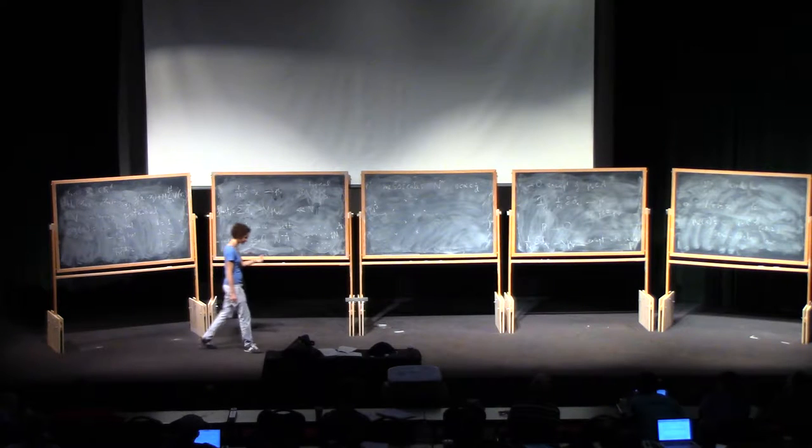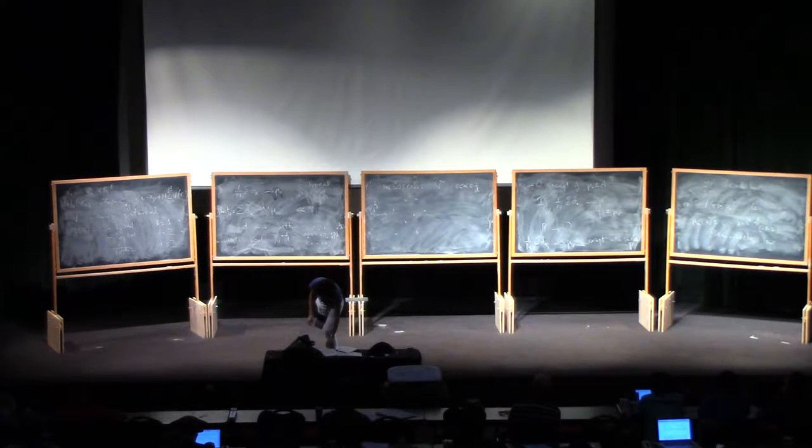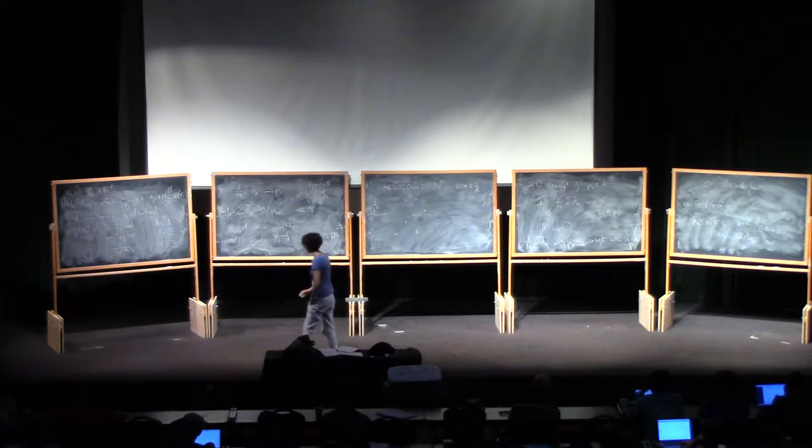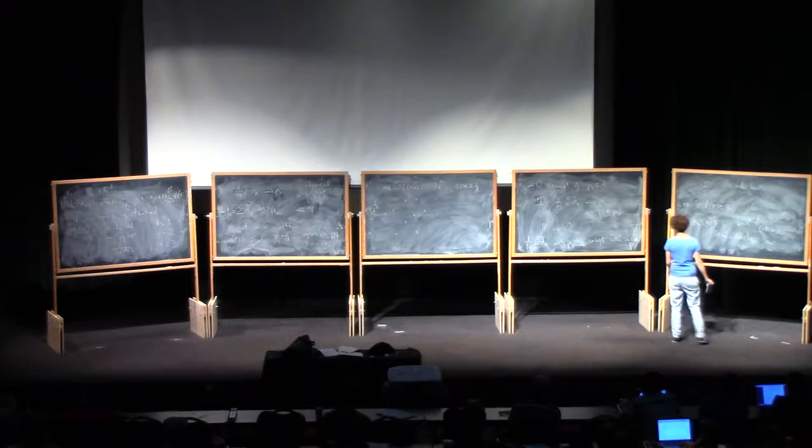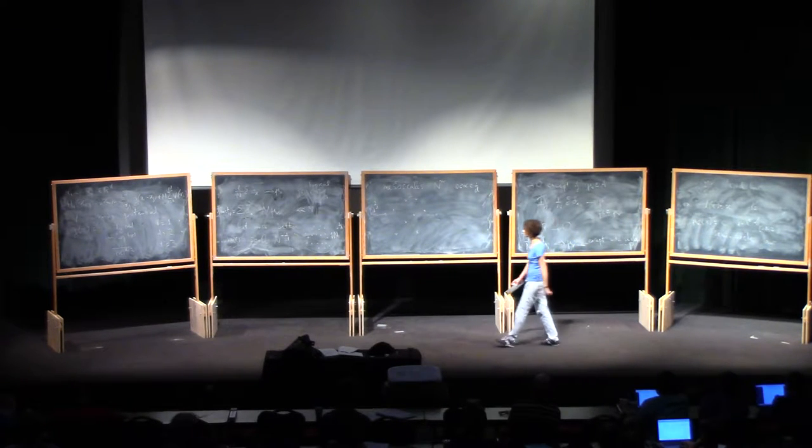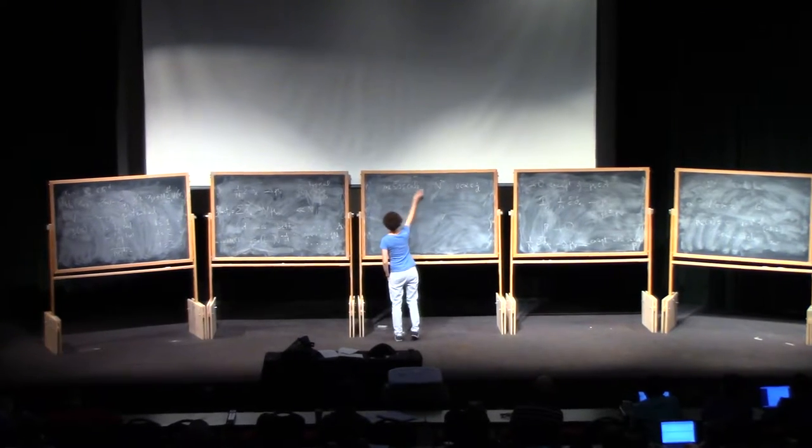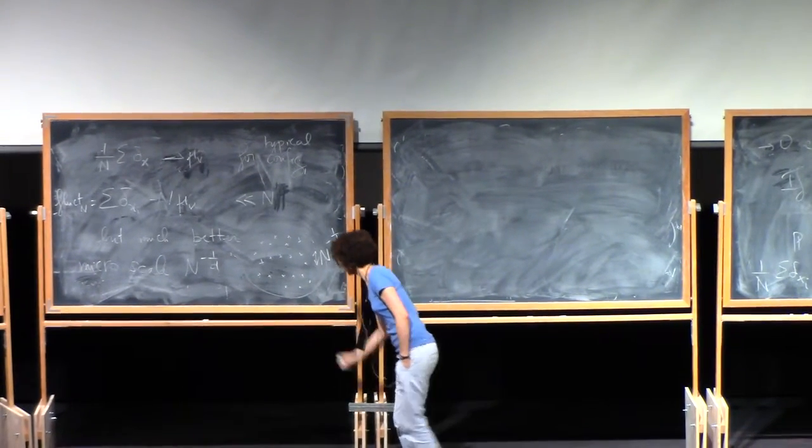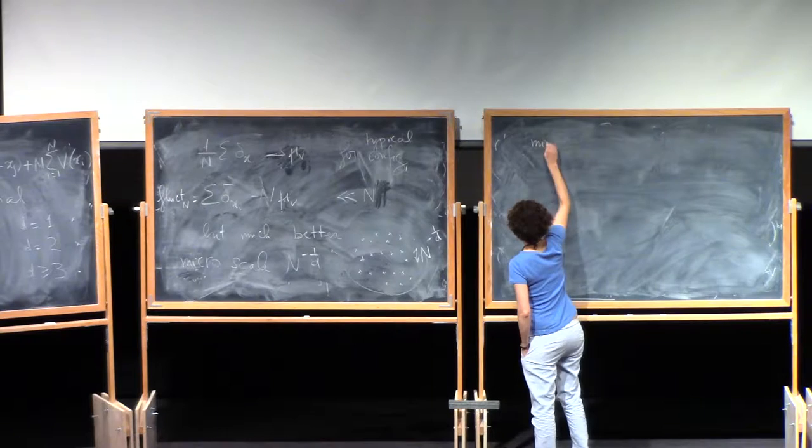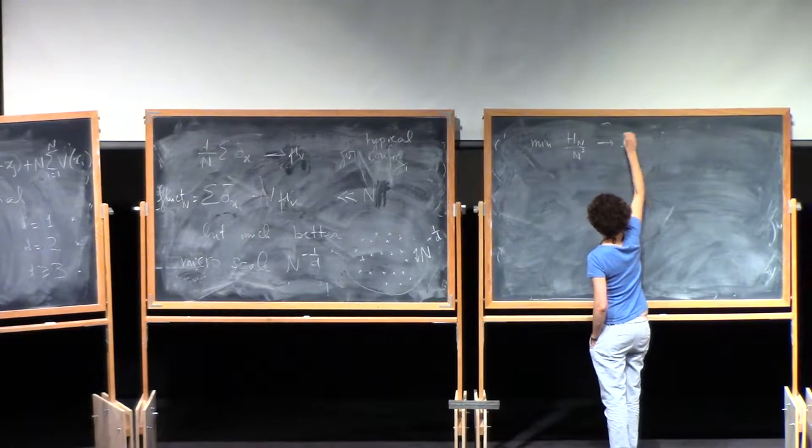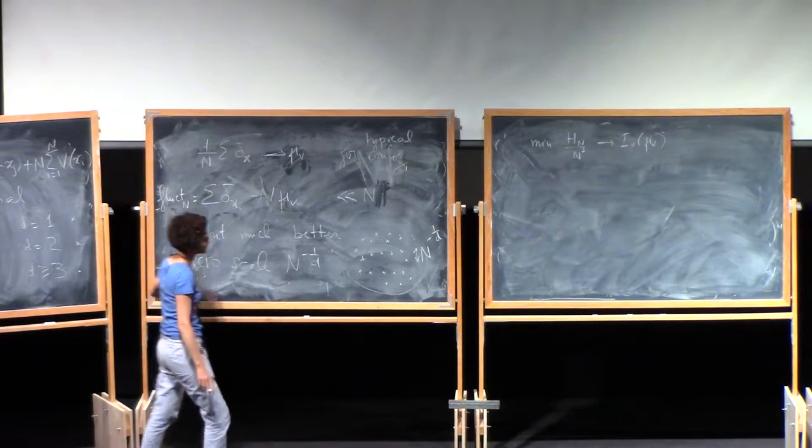Alright, so I think I've explained the motivations and what we are trying to do. And now I want to present to you what I call the electric approach, or the energy approach, where we are really going to take advantage of the Coulomb nature of the interaction. So as I said, so far everything I've discussed is not really using the Coulomb interaction. Okay, so the first thing is, in order to access this information at the microscales, we are actually going to have to expand the energy further. And you remember I told you that the minimum of HN divided by N squared is converging to IV of MuV. Now I want to go further and expand to the next order, using the expressing things in terms of the fluctuations.